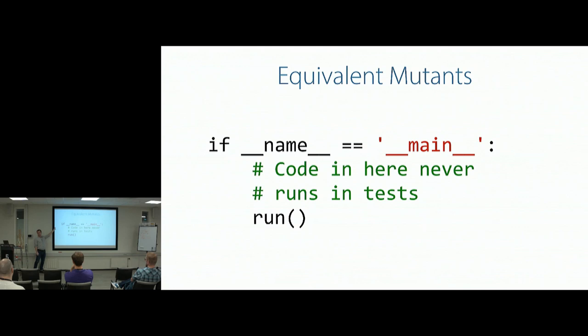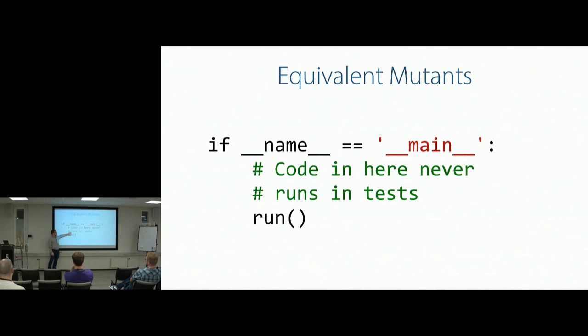There are certain technical issues with mutation testing. One is what's called an equivalent mutant — a change to a piece of code that is indetectable by a test suite no matter how good the suite is. For example, in Python, the main block is protected by an 'if __name__ == __main__' check. When running tests, this body never executes, so the mutation testing tool can mutate things in there all day and the tests will pass. That's one example of an equivalent mutant.